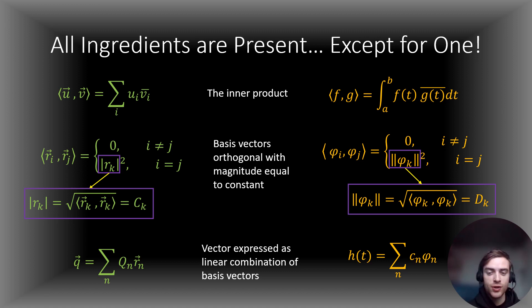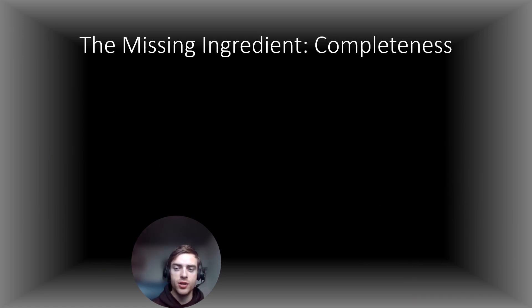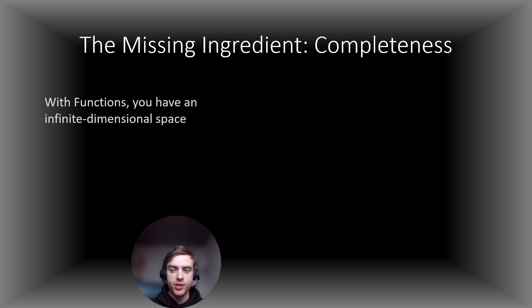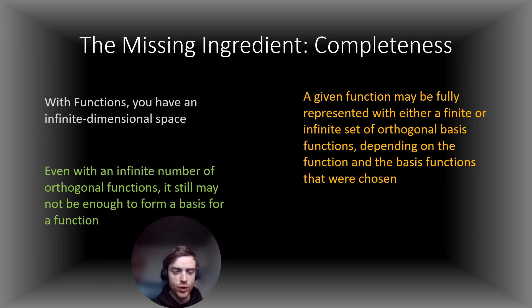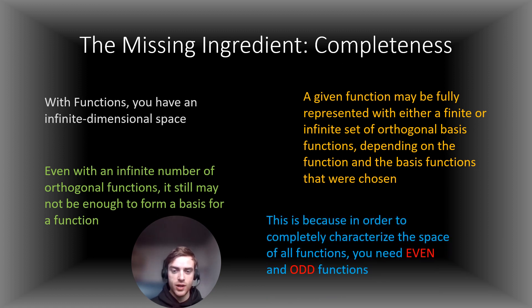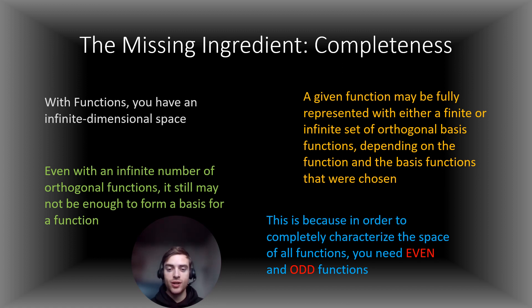This ingredient will be covered on the next slide. So what is this missing ingredient? Well, it's something that we call completeness. With functions, you have an infinite dimensional space that you need to cover. A given function may be fully represented with either a finite or infinite set of orthogonal basis functions depending on the function and the basis functions chosen. Even with an infinite number of orthogonal functions, it may still not be enough to form a basis because you need to cover all of the space. This is because in order to completely characterize this space, you need even and odd functions, as those are the two categories within this infinite set. In order to complete the infinity, you need both even and odd.